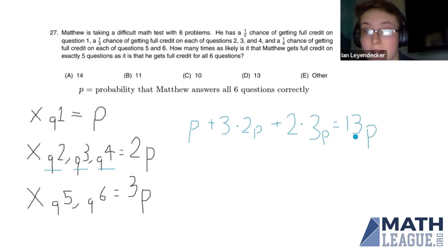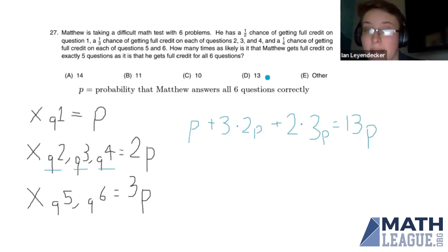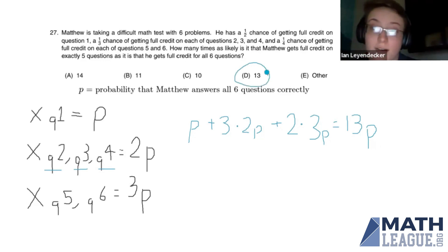So Matthew is thirteen times more likely to get full credit on exactly five questions than he is to get full credit for all six questions. Our answer is thirteen, which was D on our test, and we're done.